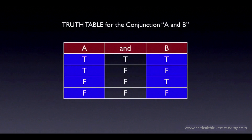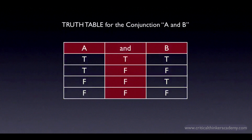In the first row, A is true and B is true. In the second row, A is true and B is false. In the third row, A is false and B is true. And in the last row, A is false and B is false. This exhausts all the possible combinations of truth values. The middle column under the "and" represents the truth value of the conjunction taken as a whole, A and B, as a function of the truth values for A and B in the adjacent row. So in the first row, if both A and B are true, then the conjunction as a whole is true. But for every other combination of truth values where at least one of the conjuncts is false, then the conjunction as a whole is false.